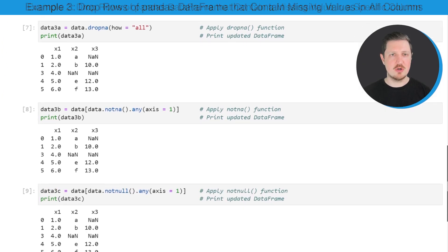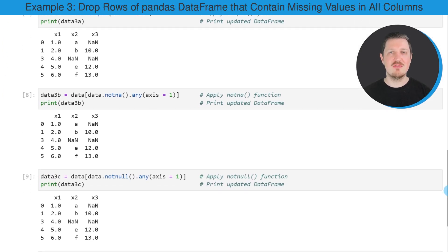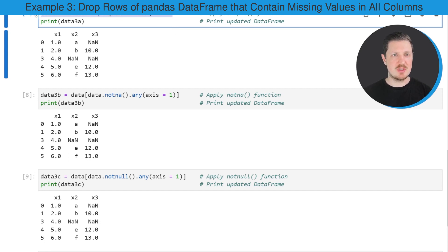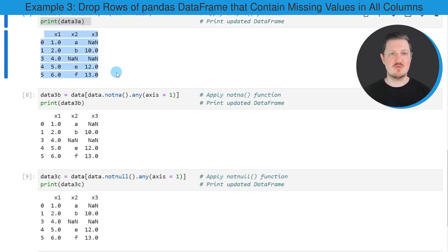It's also possible to remove only those rows where all values are NaN. We can do that by using the dropna() function again. However, this time we have to specify within dropna() that the how argument is equal to the string 'all'. I'm storing the output in a new DataFrame called data3.1 and printing it. You can see that we have removed only one row — the one that contained NaN values in all columns.